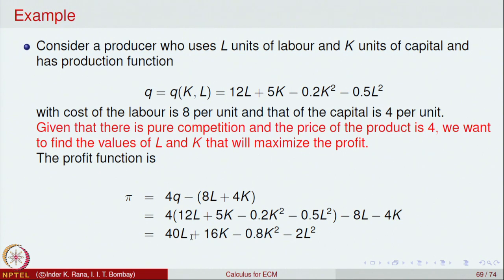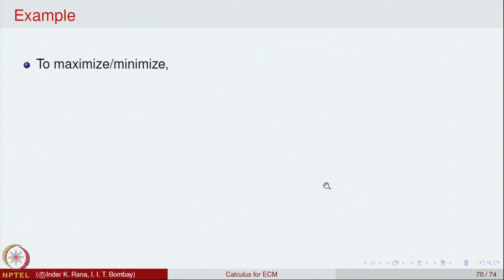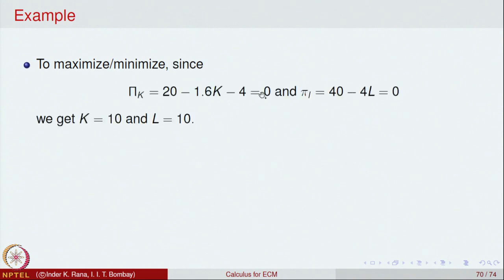We want to maximize the profit function and find the optimal inputs for labour and capital. Differentiating π with respect to K and with respect to L and setting both partial derivatives equal to zero gives K = 10 and L = 10. So when capital input is 10 and labour input is 10, the profit function is possibly at its maximum.